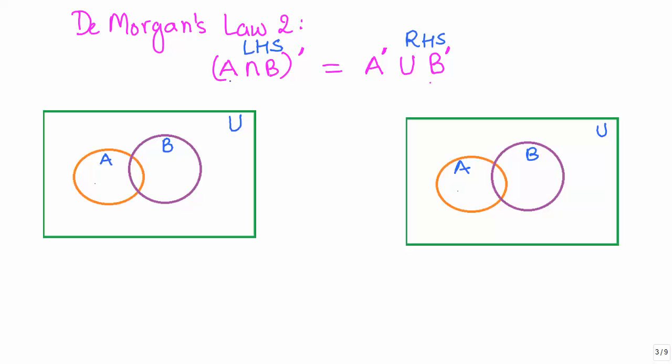Now, first we need to find out A intersection B. Intersection means what are the elements that are common to both A and B, and in this case it is pretty straightforward. This region over here is common between A and B. So this is A intersection B.